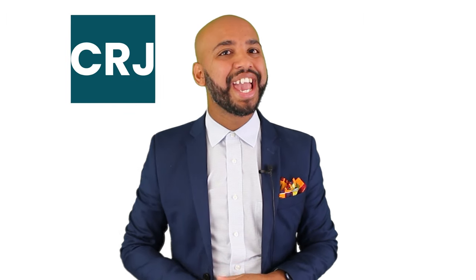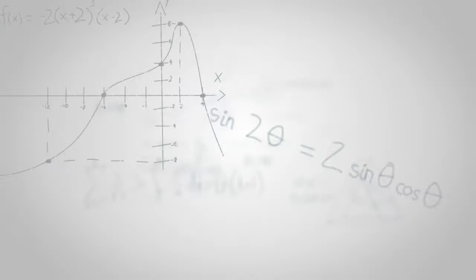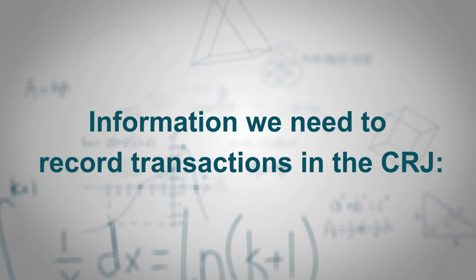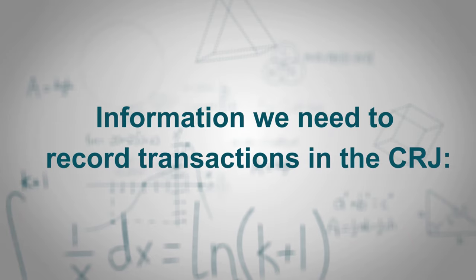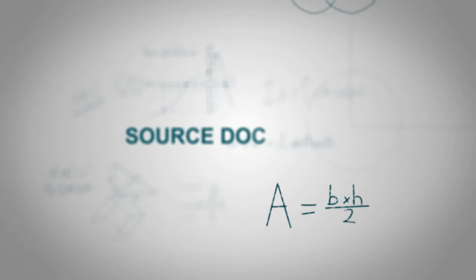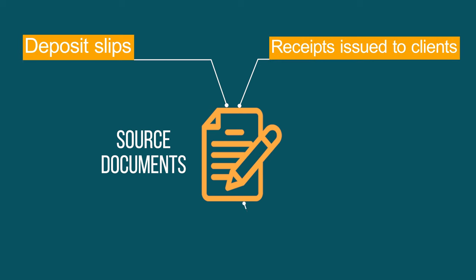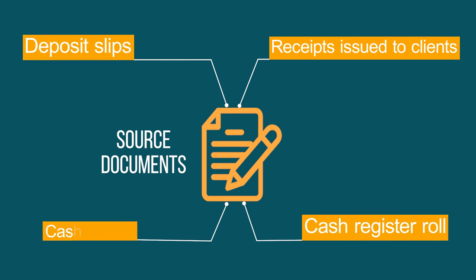All the cash received by the business is recorded in the CRJ. So what information do we need to record in the CRJ? The following source documents are needed: receipts issued to the clients, deposit slips, cash register roll, and cash invoice.